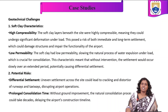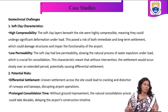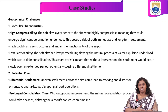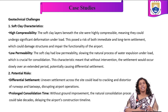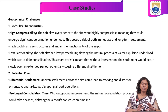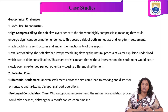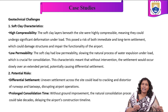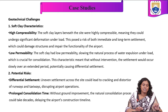The first thing is soft clay characteristics: high compressibility and low permeability are the key parameters. The soft clay layers at the site were highly compressible — whenever load is applied, the soil deforms. Both immediate and long-term settlement may happen, which could damage the structure and impair the functionality of the airport. This is one of the most important challenges faced in this case study.